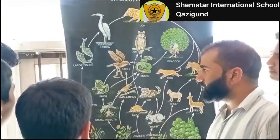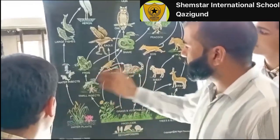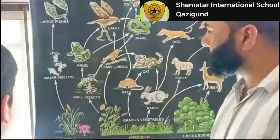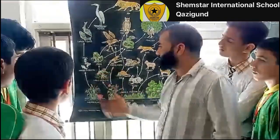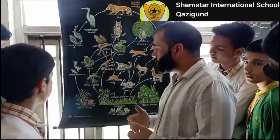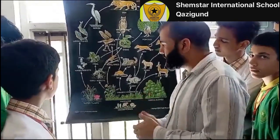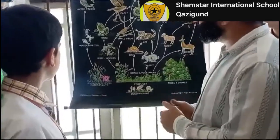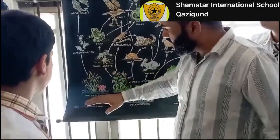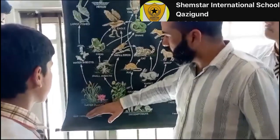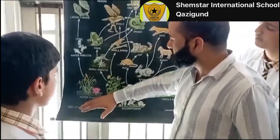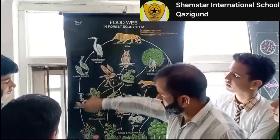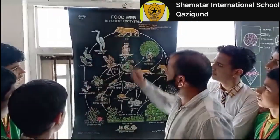Large fish eat water insects. These water insects are aquatic — they reside inside water — and they feed on water plants. So the energy is transferred from water plants to the water insects, to the large fish, to the heron, and up to the top carnivore. This forms one food chain.